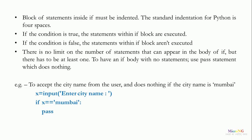Example: accept the city name from the user and do nothing if the city name is Mumbai. A variable x takes input from the user using the input method. The value of x is compared to Mumbai using an if statement: if x equals Mumbai, we use the pass statement, which does nothing. This pass statement is used during program development when the code inside the if block has not been finalized, and can later be replaced by the required block of code.